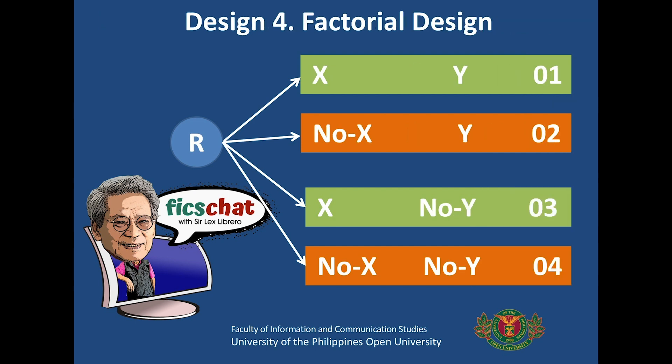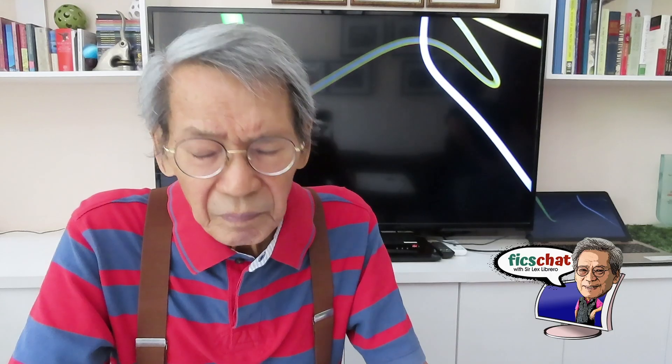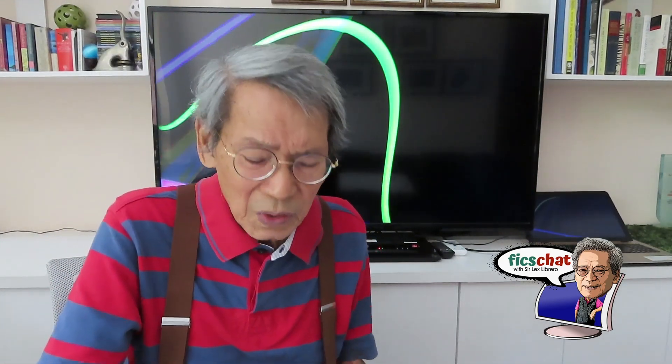The fourth design is what we refer to as the factorial design, also known as the two-by-two factor design. In simple terms, it involves comparing the effects of at least two independent variables in some experimental treatments. Those are the four experimental designs.